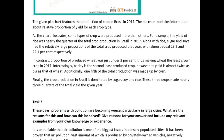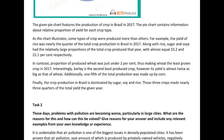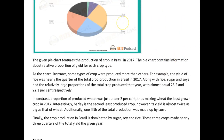I've read your whole answer again and looked at the pie chart. My biggest problem is here you say rice was nearly a quarter of total crop production. When I see 'nearly' I feel like it must be around 23 or 24 percent, but looking at the data again, rice is actually over a quarter. So you could have said 'the yield of rice was over a quarter of the total crop production in Brazil in 2017.'